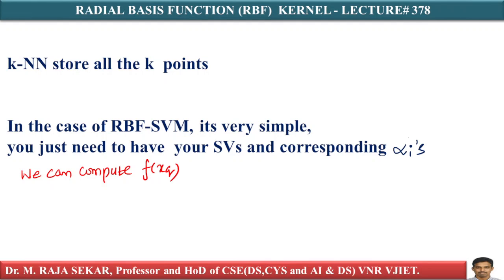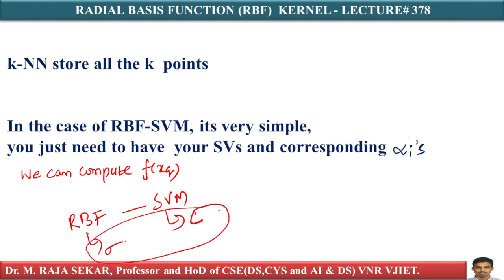The biggest drawback of KNN is runtime complexity because you need to store all the points, whereas in RBF-SVM we store only support vectors. Generally, the number of support vectors is less than or equal to n, where n is the total number of points. Therefore RBF-SVM is a nice approximation to KNN — it is a nice approximation to the K-Nearest Neighborhood algorithm, and hence RBF kernels are used as general purpose kernels.